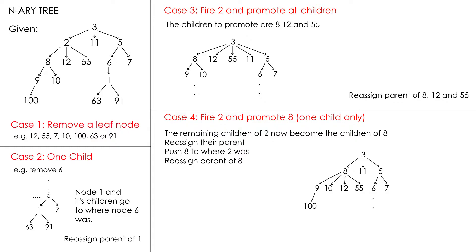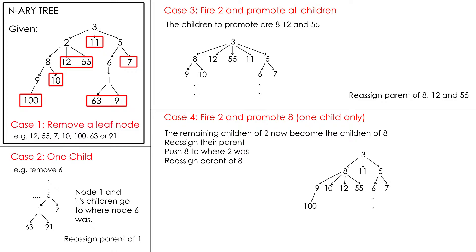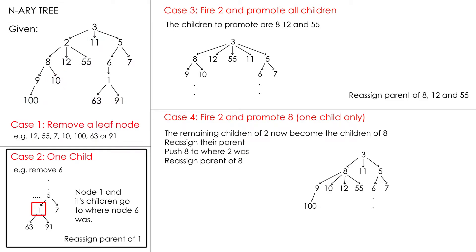We have four unique situations. Case 1 is the simplest: delete a leaf node. The leaf nodes in this tree are 11, 12, 55, 7, 10, 63, 91, and 100. To remove a leaf node, all you have to do is find the node and take it out. In case 2, node 6 has just one child — node 1 — so you simply take node 1 and put it where node 6 was. Node 1 gets promoted and its parent becomes node 5.